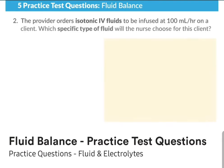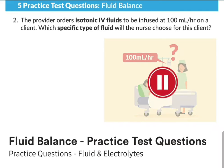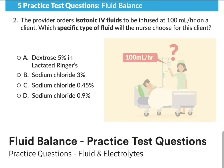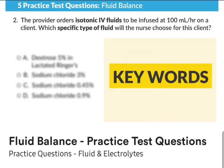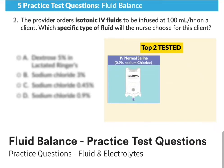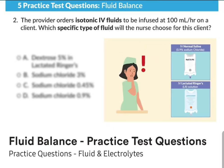Moving on to question two: the provider orders isotonic IV fluids to be infused at 100 milliliters per hour on a client. Which specific type of fluid will the nurse choose? Before looking at the options, the first key word is isotonic solutions. Remember, the top two tested are 0.9% sodium chloride — that normal saline — and LR, lactated Ringers. This is more of a knowledge-based question.